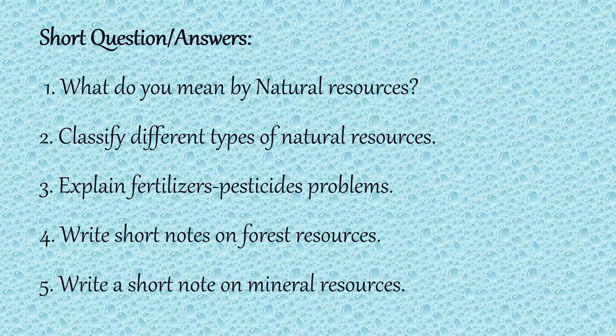Resources which are available in abundance and are unlimited, like air and water, are known as inexhaustible natural resources. Whereas exhaustible natural resources are those which get exhausted with the passage of time — their quantity is limited, their availability is limited, for example forest resources. These exhaustible resources can further be classified into renewable and non-renewable natural resources. Resources which get regenerated with the passage of time are known as renewable natural resources. Non-renewable natural resources cannot be regenerated immediately, for example fossil fuels.